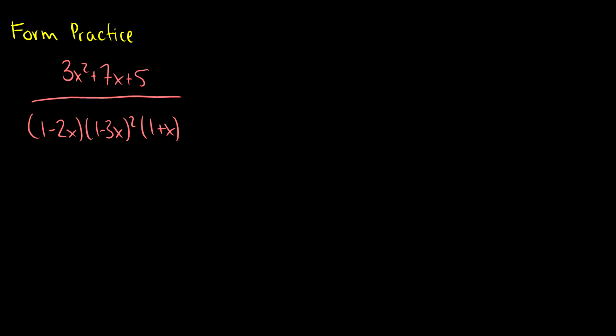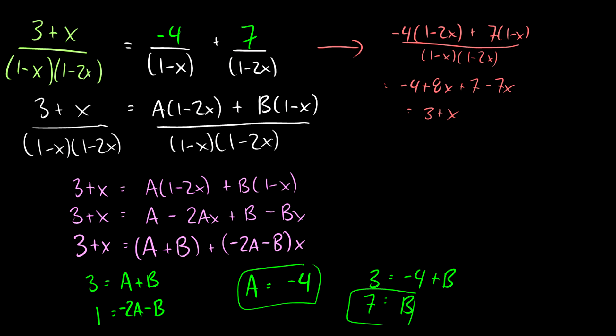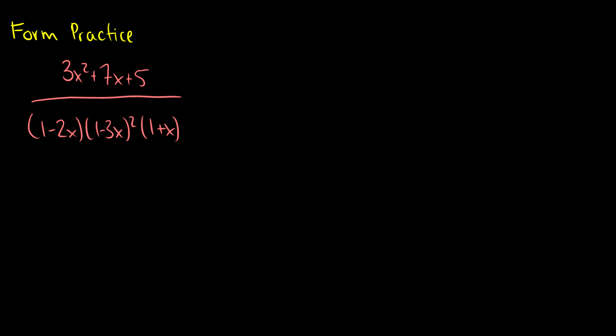Let's do a more practice question. Since what you're probably saying is, okay, I understand that you split up into A over 1 minus x plus B over 1 minus 2x, but what happens when things get a little bit trickier with more than 2? So what we have here is three different denominators: 1 minus 2x, 1 minus 3x squared, and 1 plus x. So we have A over 1 minus 2x, then B over 1 plus x. But what do we do about this 1 minus 3x squared?